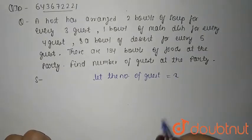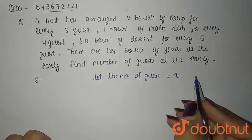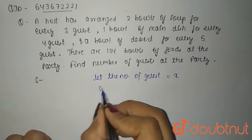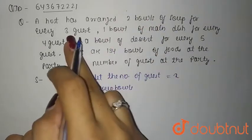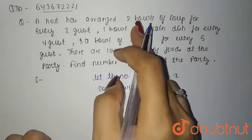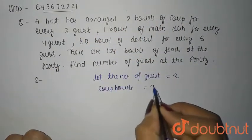Because we don't know the number of guests, let the number of guests be x. So first of all, soup bowls is for every three guests there are two bowls of soup, that means 2x by 3.